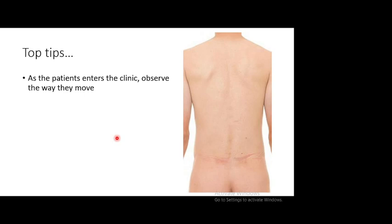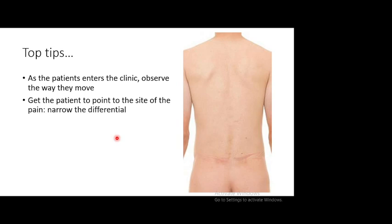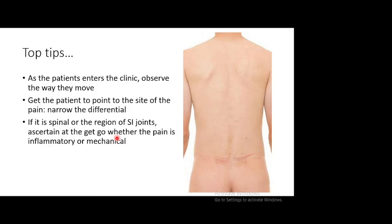As the patient enters the clinic, observe how they move. Always remember: for the patient, the back is everything from the scapulae down to the buttocks — it's a huge area. At the beginning, ask the patient to point to the site of the pain, because that narrows down your differential considerably. For example, you would not be thinking of a vertebral wedge fracture if the patient is pointing to the buttock.